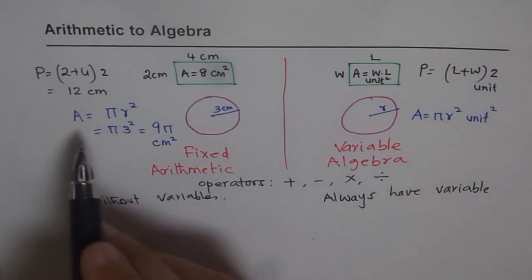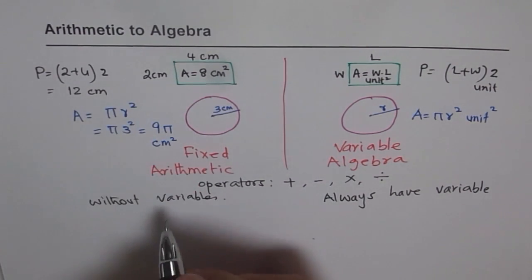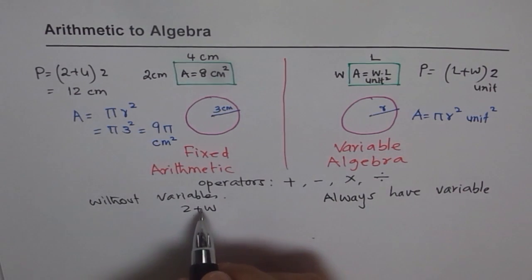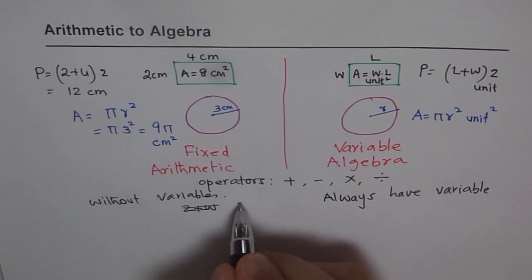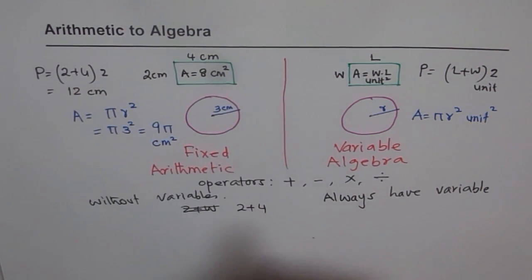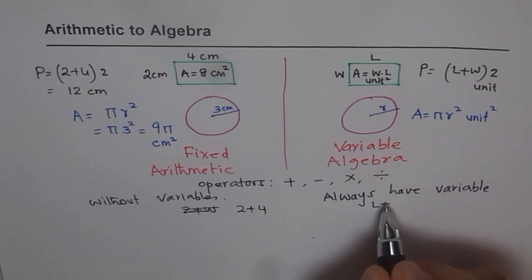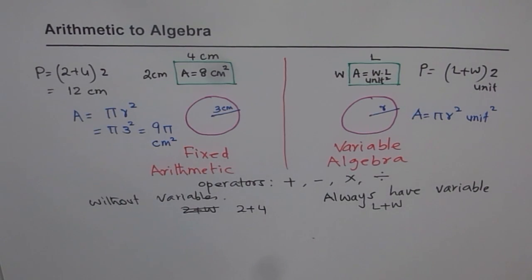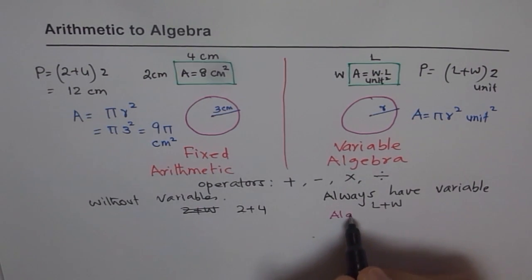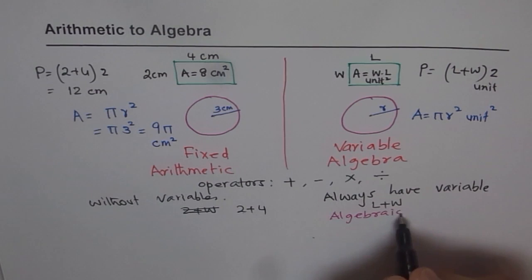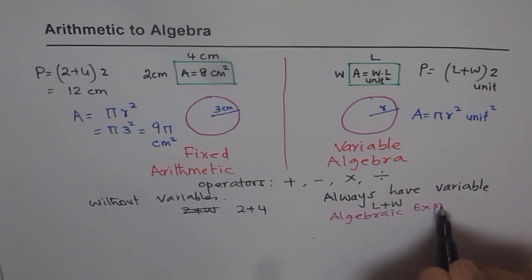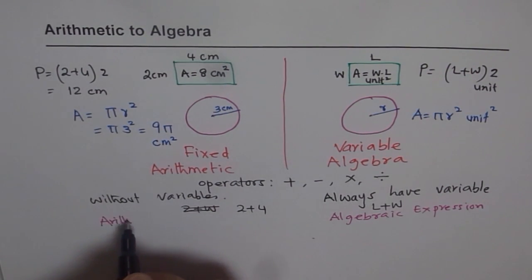And now if we have something like combination as we saw here, when we say 2 plus 4, we'll call this as arithmetic expression. But here if I write length plus width, then we call this as an algebraic expression.